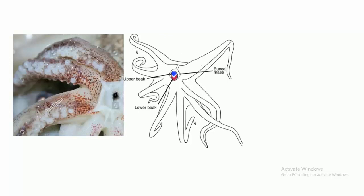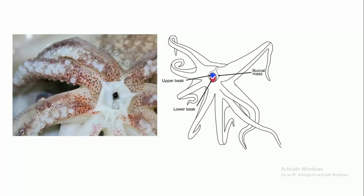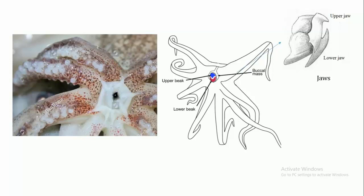The mouth is a thin lobed peristomal membrane with a circular tip, within which lies a pair of strong, curved and powerful horny jaws. In this picture you can see the upper jaw and lower jaw. The mouth leads into the thick walled buccal cavity which bears the odontophore and the radula. The radula is covered with minute teeth.